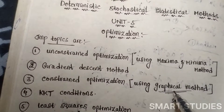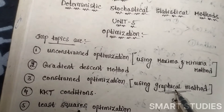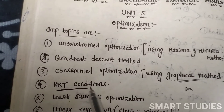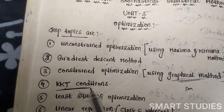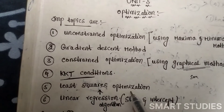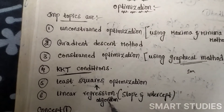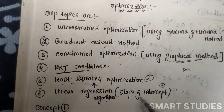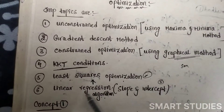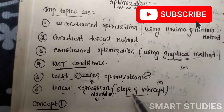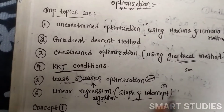We use the graphical method when the objective function and constraints are of linear type. When the objective function is more than linear type, or constraints involve higher degree polynomials, we use the simplex method. The fourth and most important topic is KKT conditions. The fifth is least square optimization. The sixth is linear regression algorithms, which includes least square optimization and the slope and intercept concept.